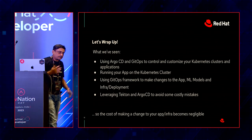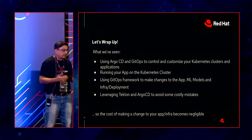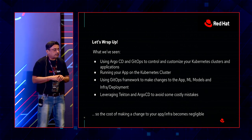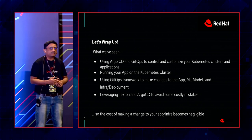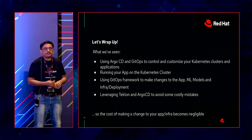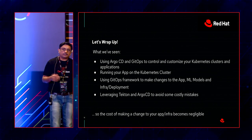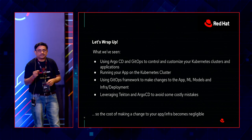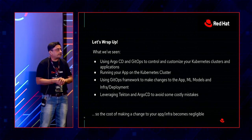So what we have seen: we used Argo CD and GitOps to control and customize Kubernetes clusters and applications. Running apps on Kubernetes, we use Git to make changes to apps, ML models, and infrastructure deployment. We used tools like Tekton Pipeline, OpenShift GitOps which is Argo CD, Kustomize, and the models. We saw how leveraging Tekton and Argo CD can avoid costly mistakes in an enterprise segment — the cost of making changes to your app infrastructure becomes negligible using GitOps strategy. How many of you actually use GitOps in your organization?